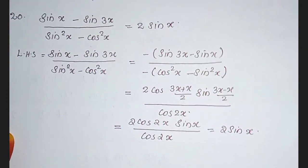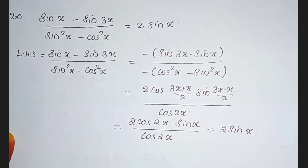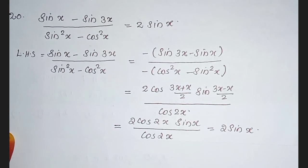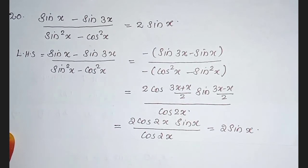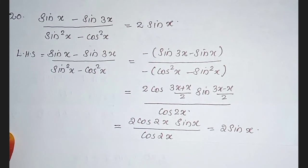Question 20: sin x minus sin 3x divided by sin squared x minus cos squared x equal to 2 sin x. LHS is sin x minus sin 3x divided by sin squared x minus cos squared x. We can take negative outside from both numerator and denominator. That is negative(sin 3x minus sin x) divided by negative(cos squared x minus sin squared x).